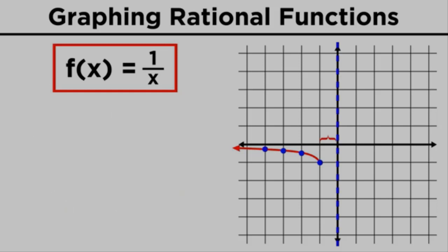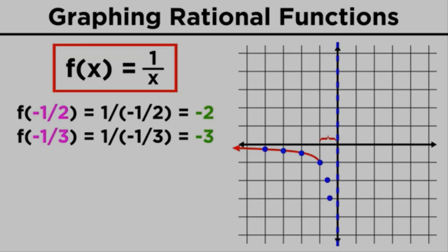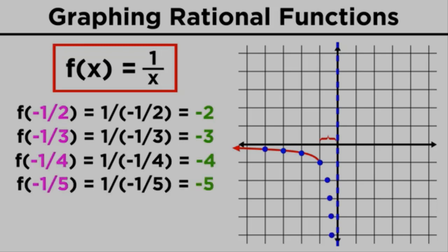In this tiny interval from negative one to zero, we can see that plugging in fractions of negative one will give us very big negative numbers that decrease rapidly, heading towards negative infinity as x approaches zero. So that will look like this.